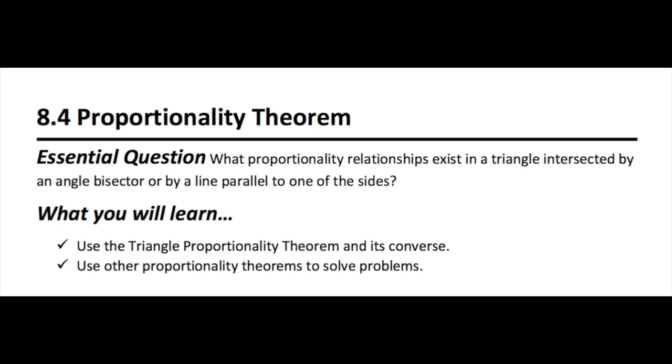8.4 Proportionality Theorem is an essential question. What proportionality relationships exist in a triangle intersected by an angle bisector or by a line parallel to one of the sides? Expected outcomes for your learning will be to use the triangle proportionality theorem and its converse, also to use other proportionality theorems to solve problems.